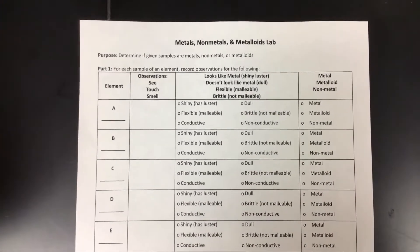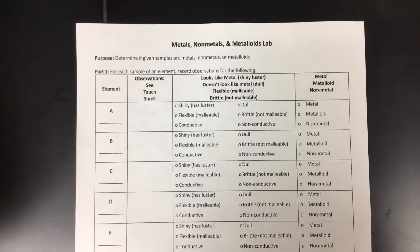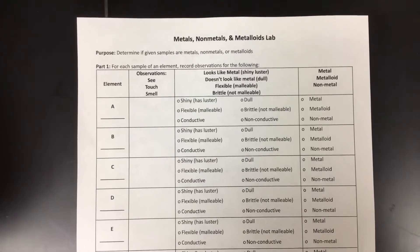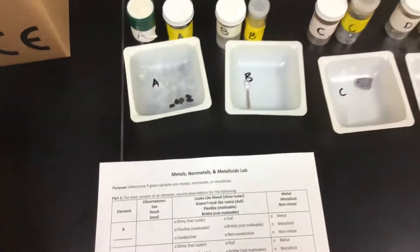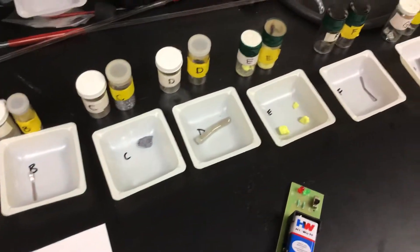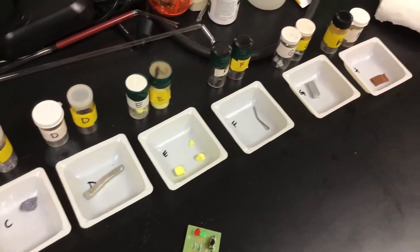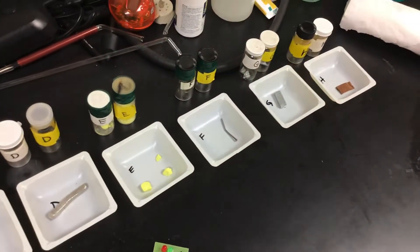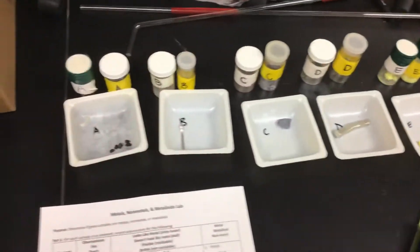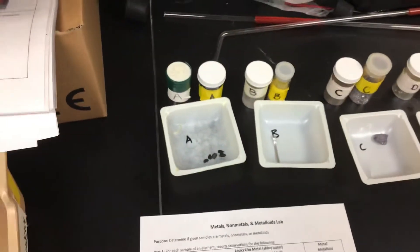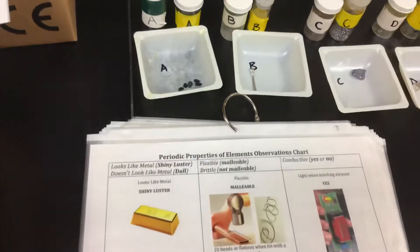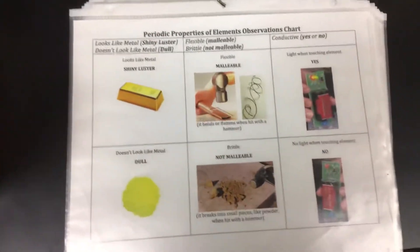Hello. This video is going to be on the metals, nonmetals, and metalloids lab. For this lab, you have a bunch of samples of metals, nonmetals, and metalloids. What we are going to do with those samples is analyze them based on some properties that metals, nonmetals, and metalloids have, to be able to decipher which ones are metals, which ones are nonmetals, and which ones are metalloids.